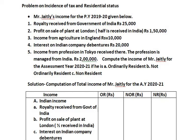In today's class, we are going to solve a 15-marks problem on incidence of tax and residential status. Before we directly start solving the sum, let us first understand how many kinds of income we need to consider while solving the problem.